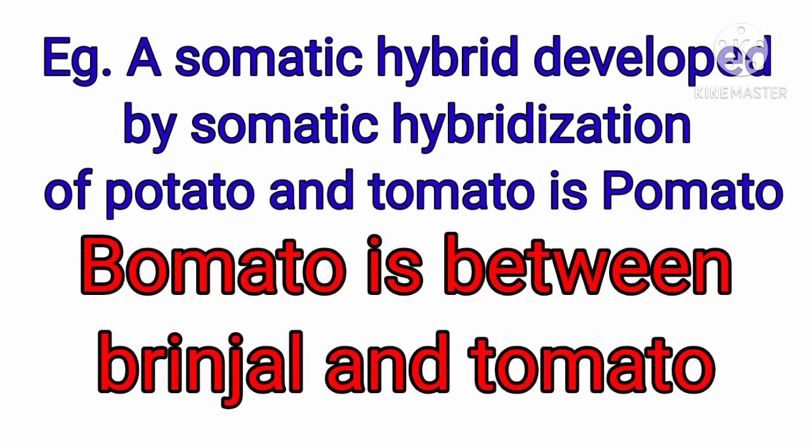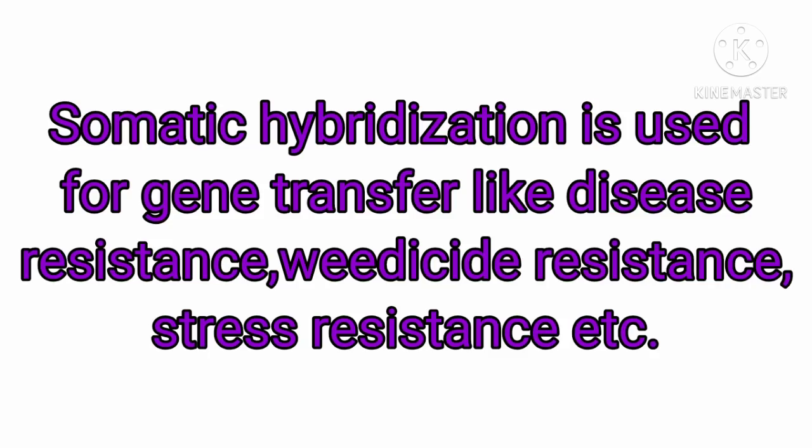A somatic hybrid developed by somatic hybridization of potato and tomato is called Pomato. Commercially it was not fully successful, but it was a new method to produce new types of plants. Another example is Bomato, between brinjal and tomato. Somatic hybridization is used for gene transfer such as disease resistance, herbicide resistance, and stress resistance.